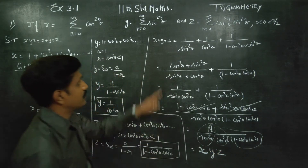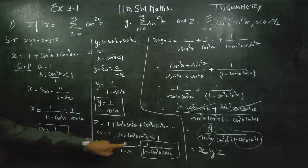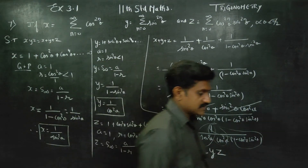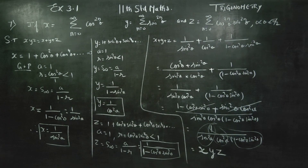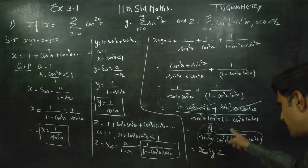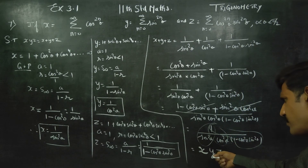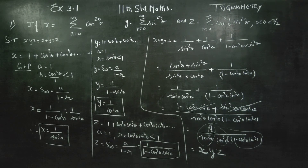So we started with X plus Y plus Z and we are ending with X into Y into Z. Into into 1 by, into 1 by, into — 1 by 3 into 3 into 1 by 1, that is 1. If you want to prove it, you will get 1. Therefore X plus Y plus Z equals X into Y into Z. Thank you.